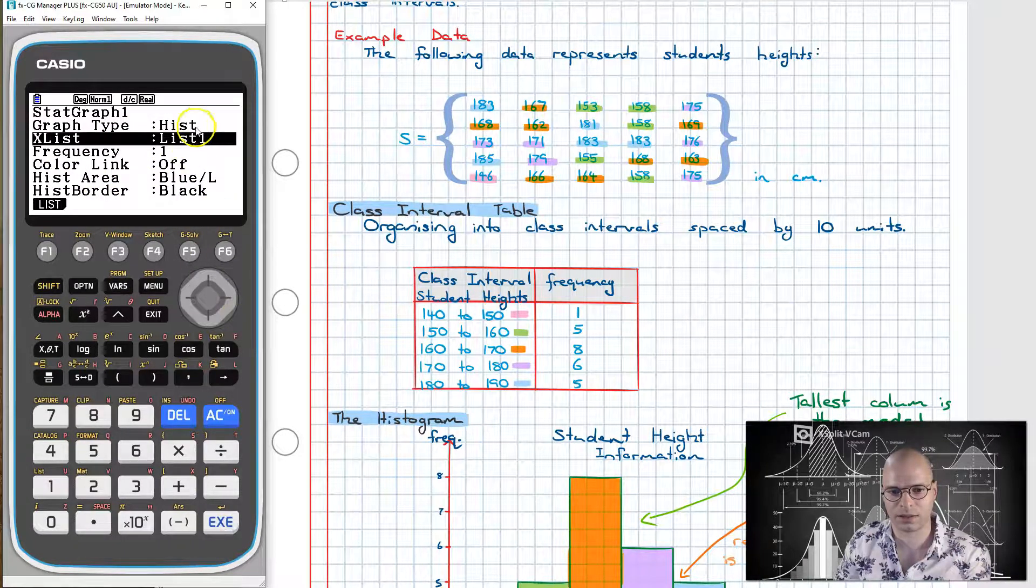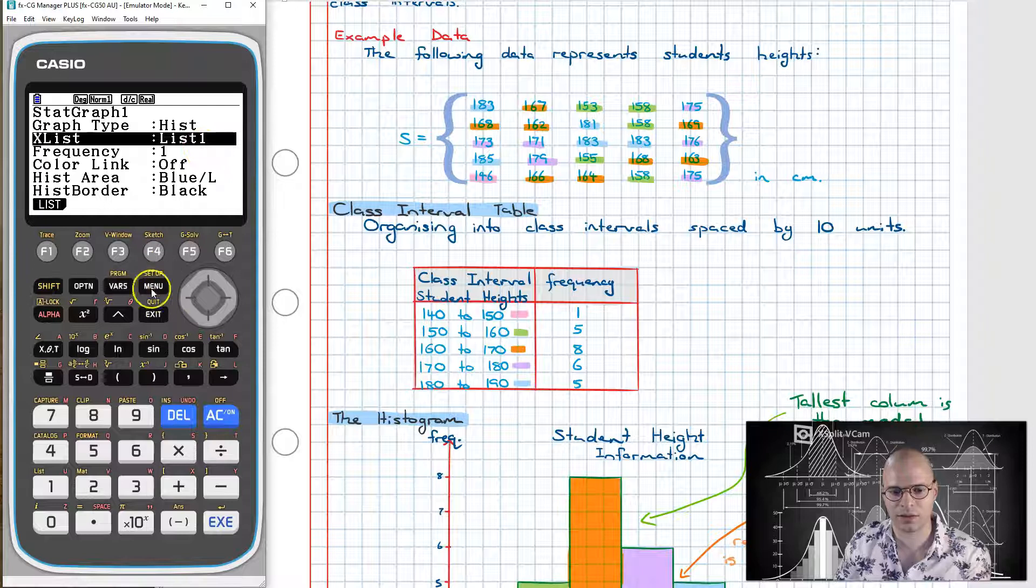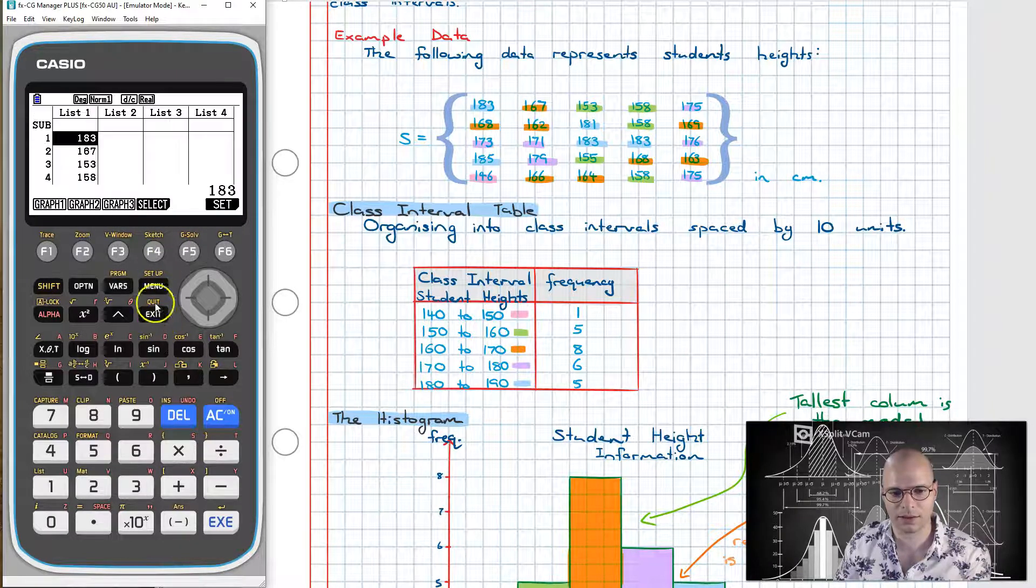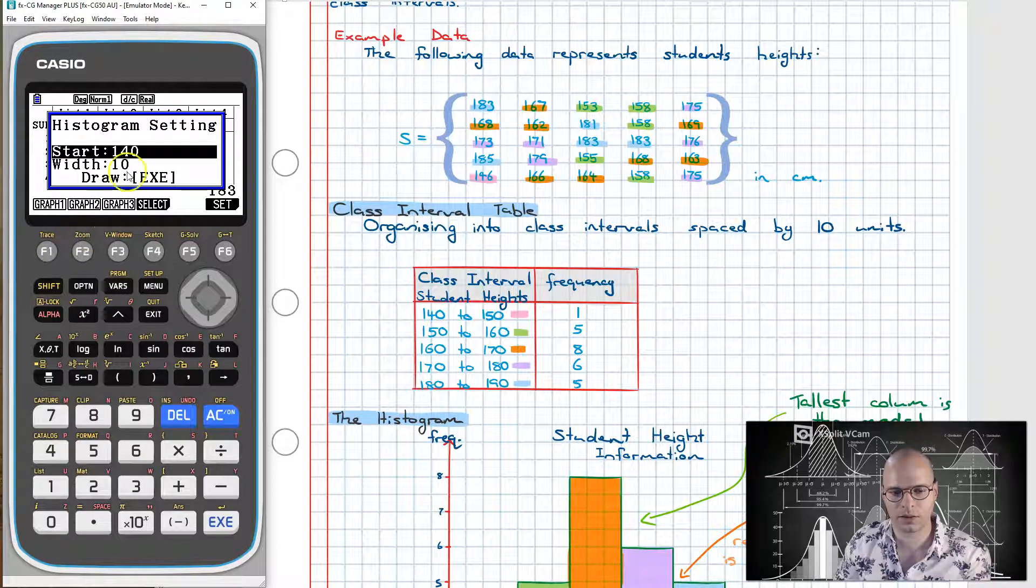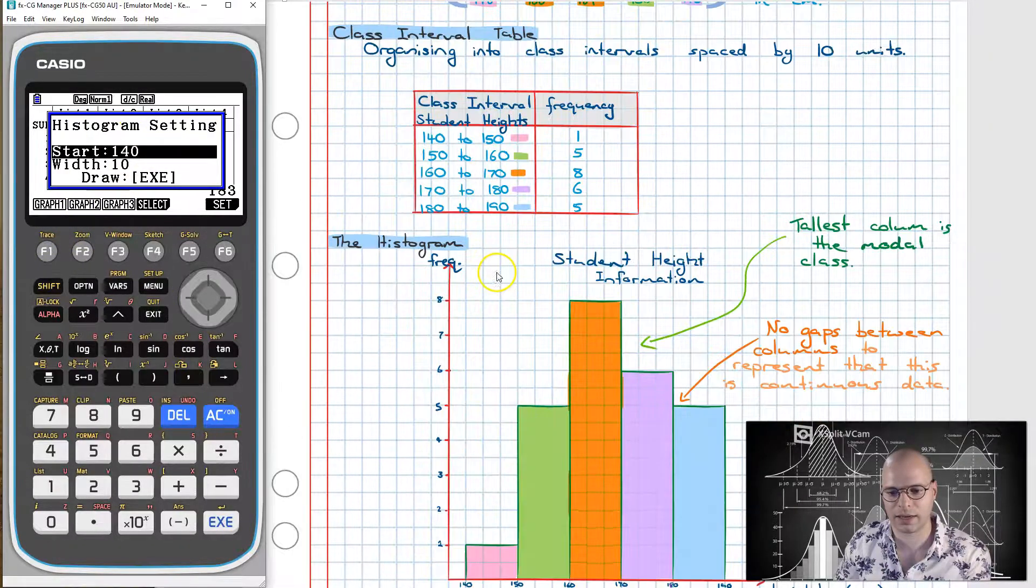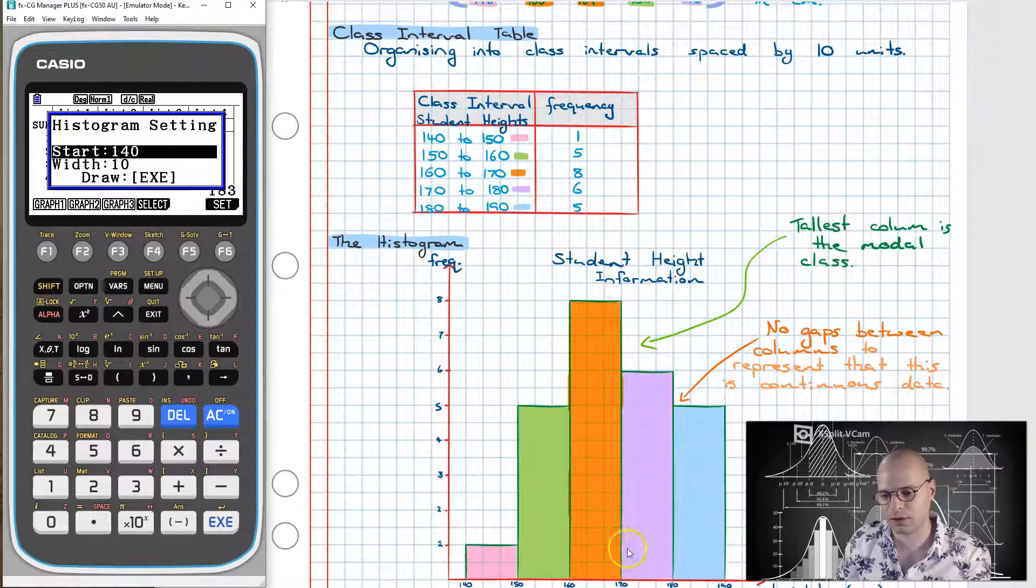If my data was in list 2 I'd set it to list 2. We're done with this now. So we'll click exit. Next step is we click on F1 to go to graph. It will then present us with these settings. Now I want to replicate the graph that I have over here.